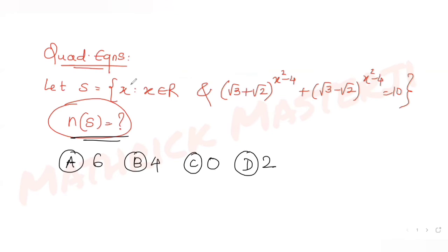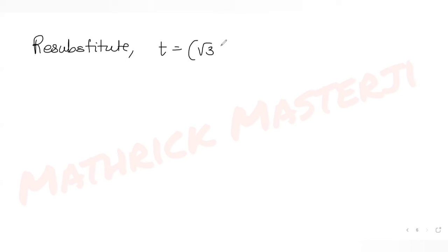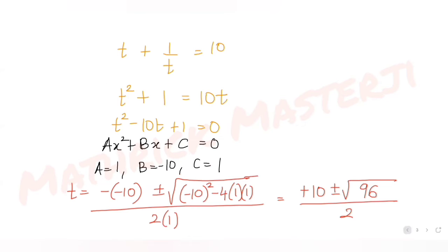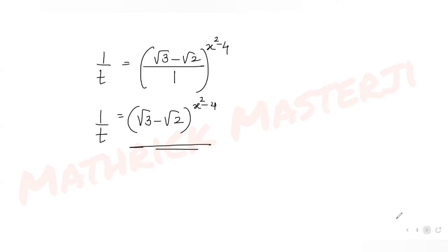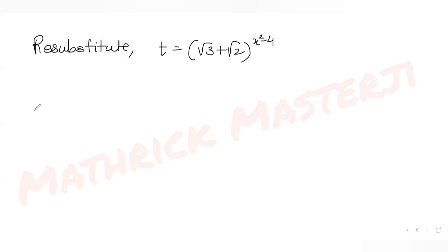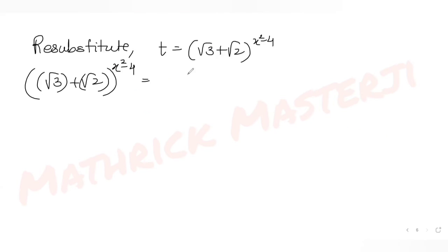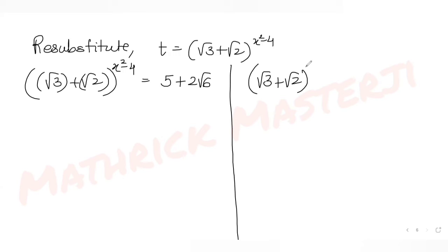Now we resubstitute t back. Since t = (√3 + √2)^(x²−4), we get two equations: (√3 + √2)^(x²−4) = 5 + 2√6, and (√3 + √2)^(x²−4) = 5 − 2√6.